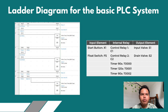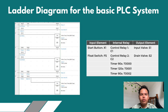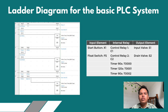For the second one, the input is the flood switch, FS, and the internal relay is Control Relay 2, C2, and Timer 90 seconds for the tank to fill up to the limit. Timer 120 seconds, which is T001, and Timer 90 seconds — these are the timer values given in the instructions. The output is the trim valve, S2.